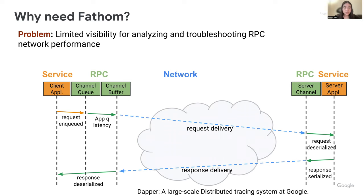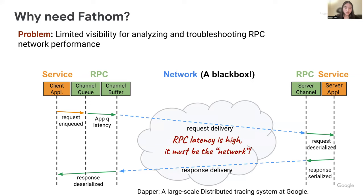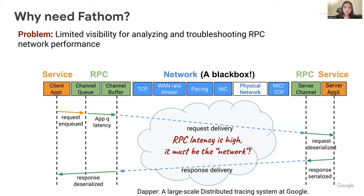Dapper treats the network stack as a black box, and the time spent in the network is calculated from when a request is issued at the client until the response is received from the server. Unfortunately, this simplified view often attributes high RPC latency to the network, disregarding the many other critical layers within the network stack, including TCP, rate limiter, pacing, and NIC. Each layer is critical for determining RPC network performance, and this lack of visibility can cause significant delays in troubleshooting performance issues and an incomplete understanding of network infrastructure performance.